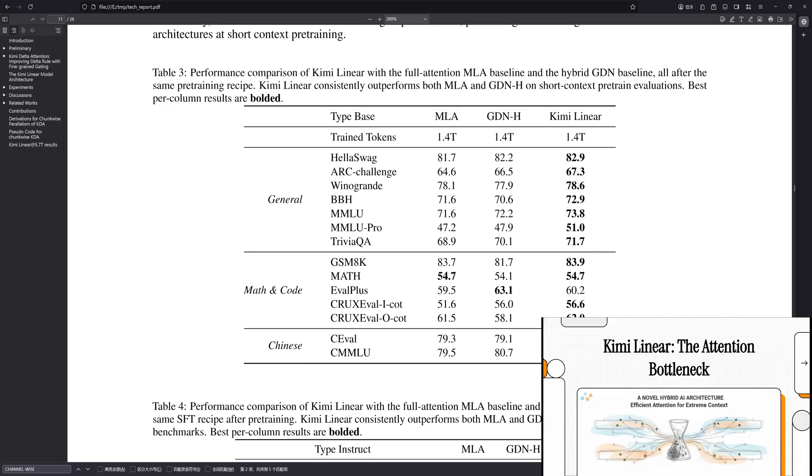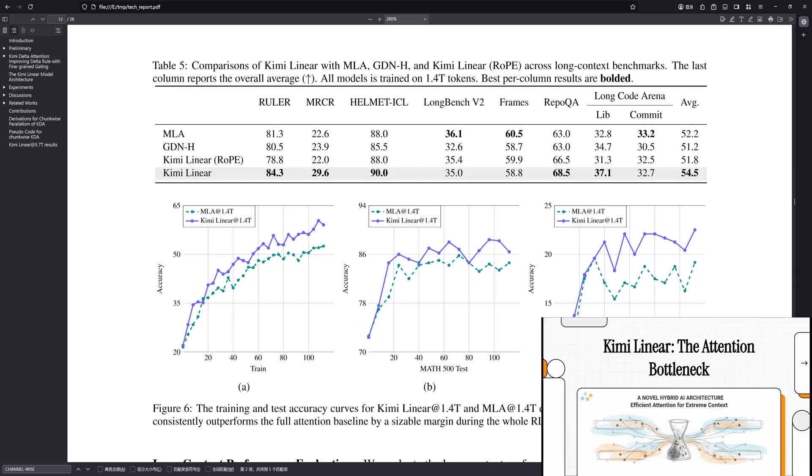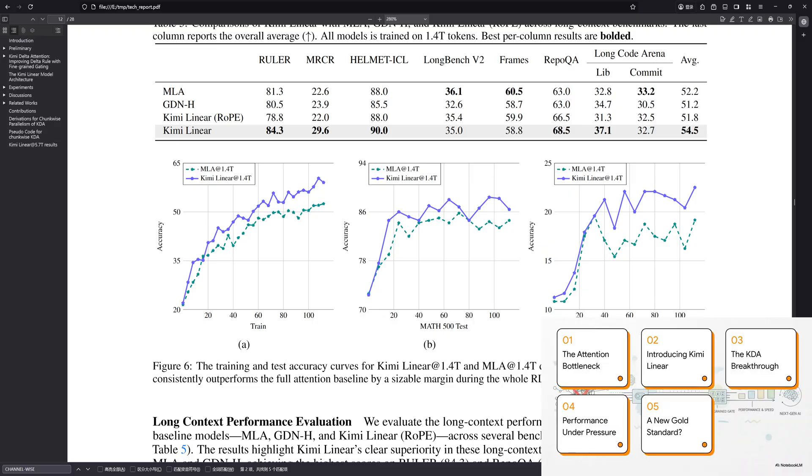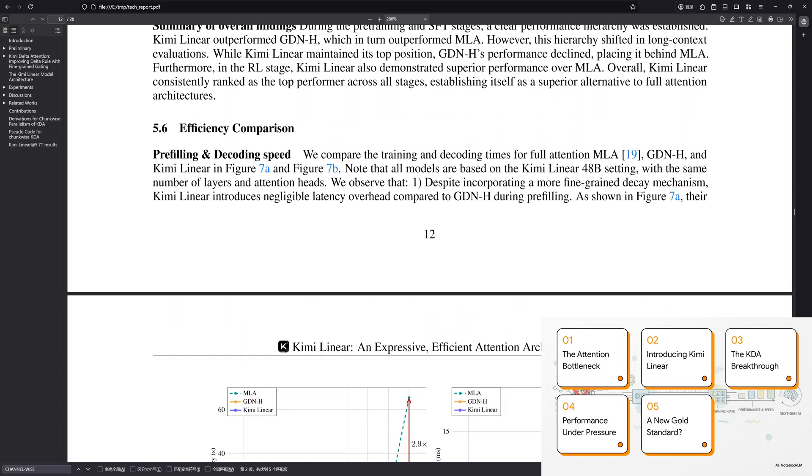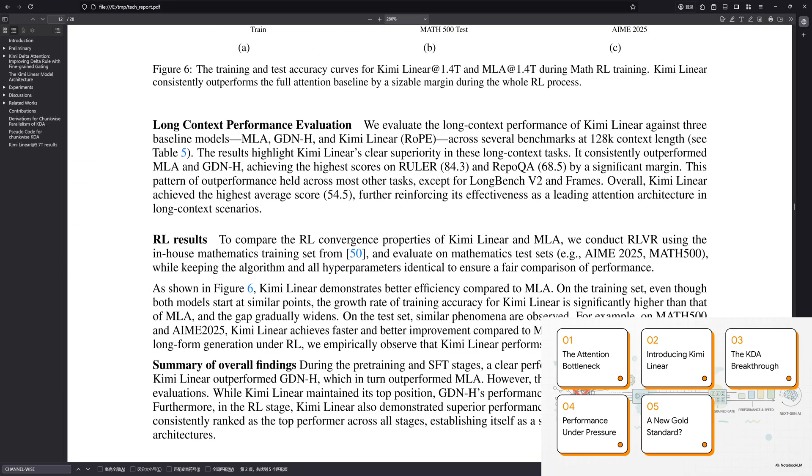Today, we're diving into something that feels like a real breakthrough in AI. It's a new architecture called Kimi Linear, and it's designed to solve one of the most fundamental problems holding back large language models, the attention bottleneck. This could be a huge step forward in making these models way more efficient and a whole lot more powerful. All right, so here's our game plan. First, we're going to really understand the problem we're trying to solve. What exactly is this attention bottleneck?